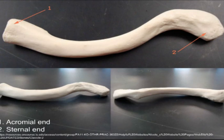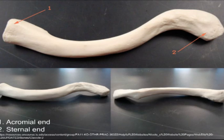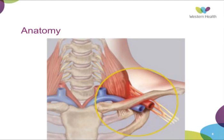The clavicle is an S-shaped bone, convex anteriorly on the medial side, to permit the passage of the neurovascular bundle through the shoulder girdle. The lateral end flattens down to the articulation of the acromion, with the vascular bundle being the subclavian vein and artery, emerging between the costoclavicular ligament and pectoralis minor. You can also see the lateral cord of the brachial plexus sitting just below the clavicle, just next to the tuberosity.